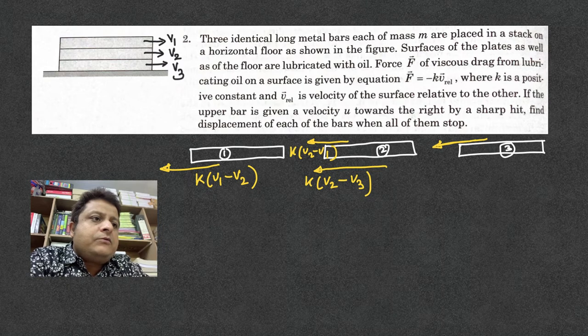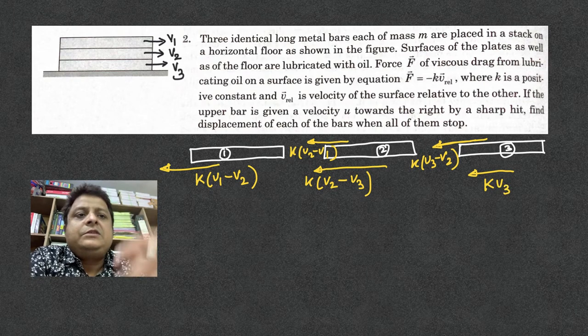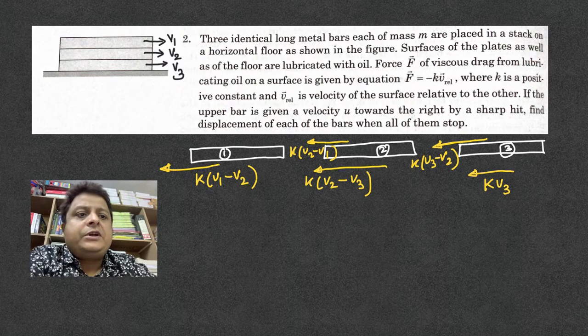On the upper surface of two the force is k times v3 - v2. On the lower surface of three, it's actually k into v3 - 0, that means ground is at rest, so it's simply k into v3.